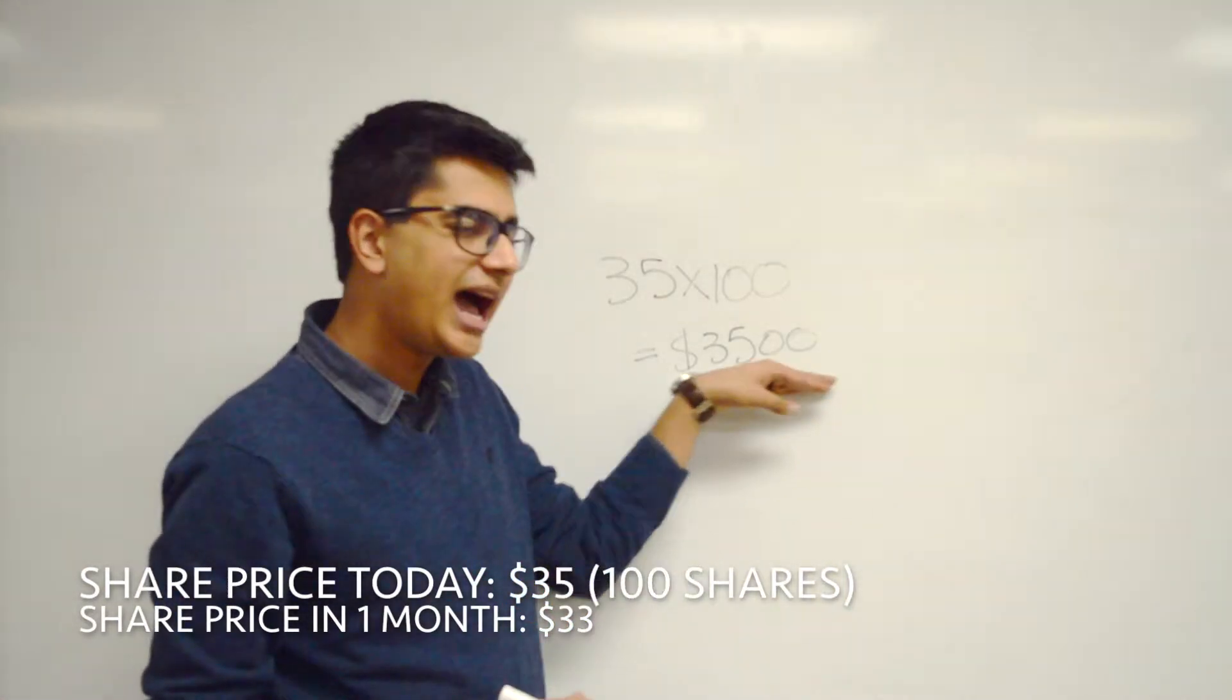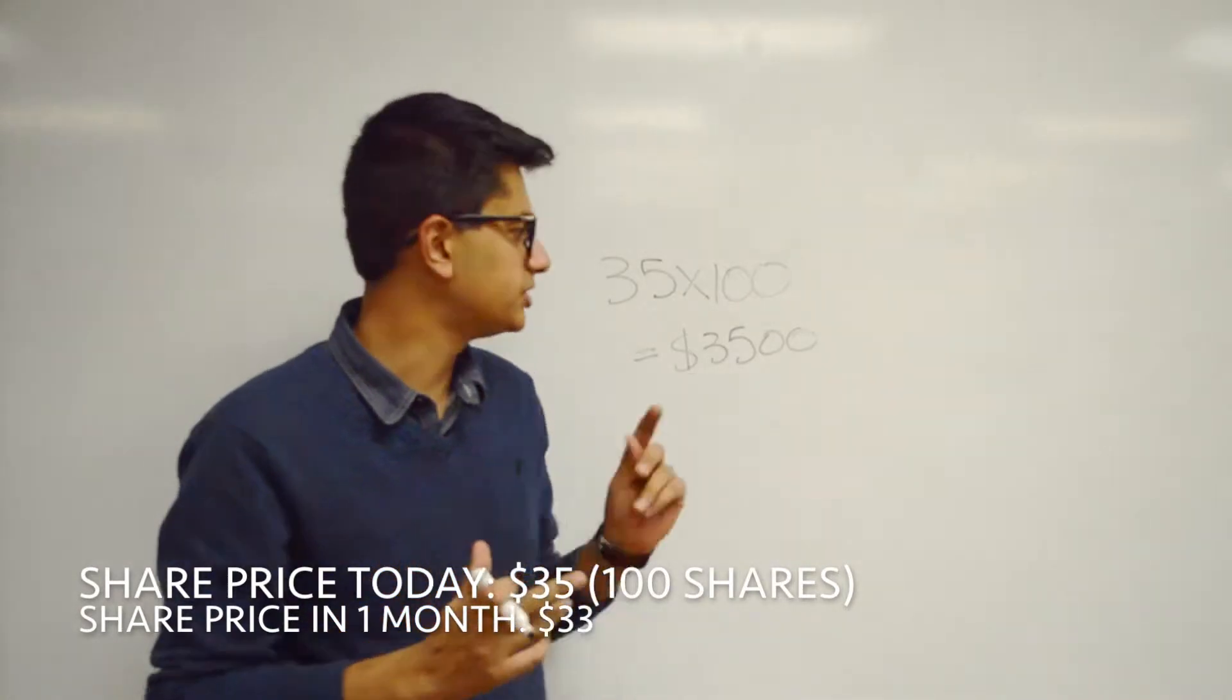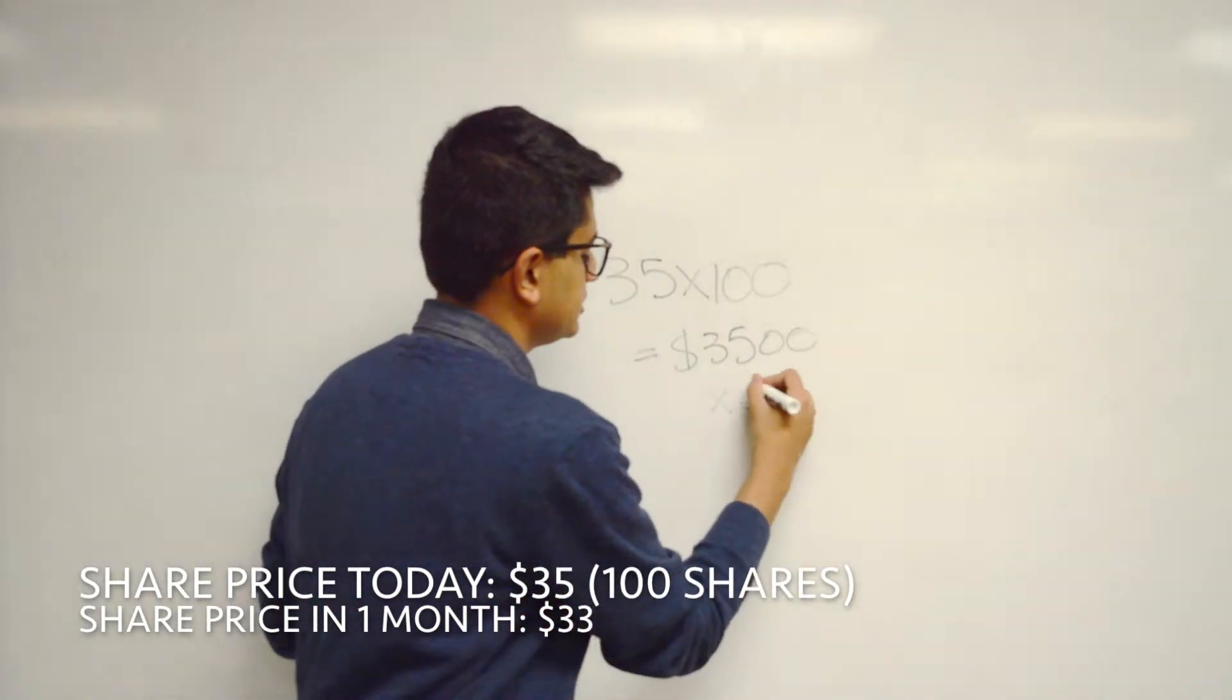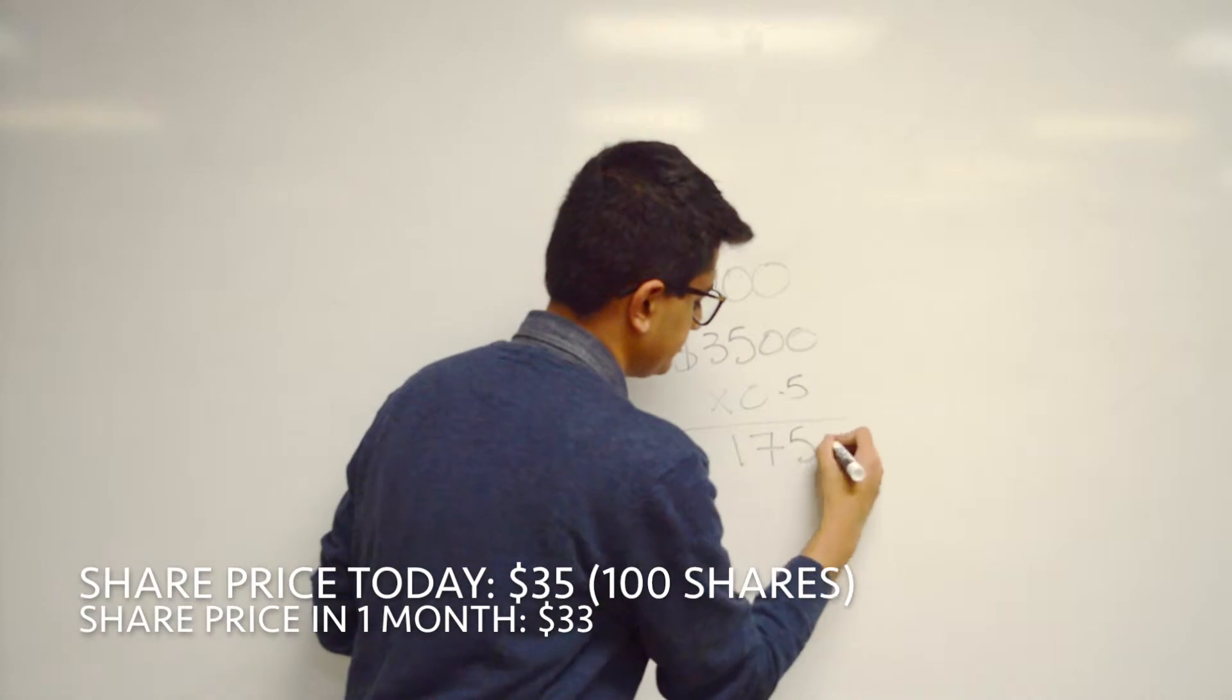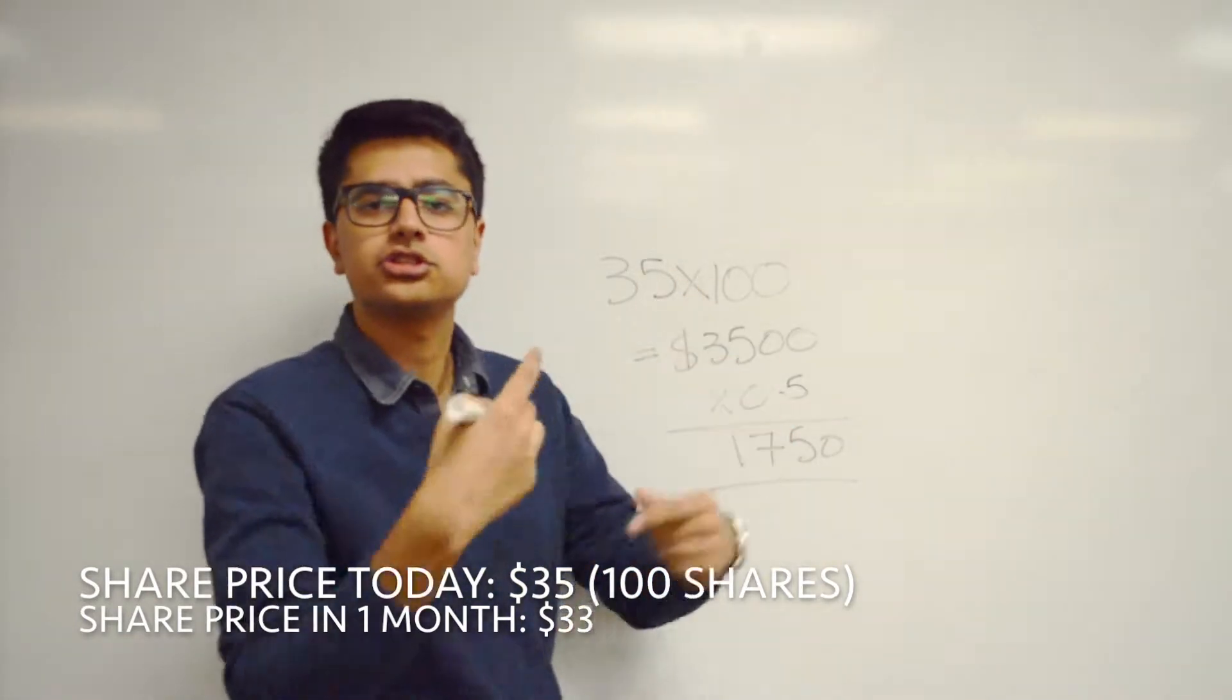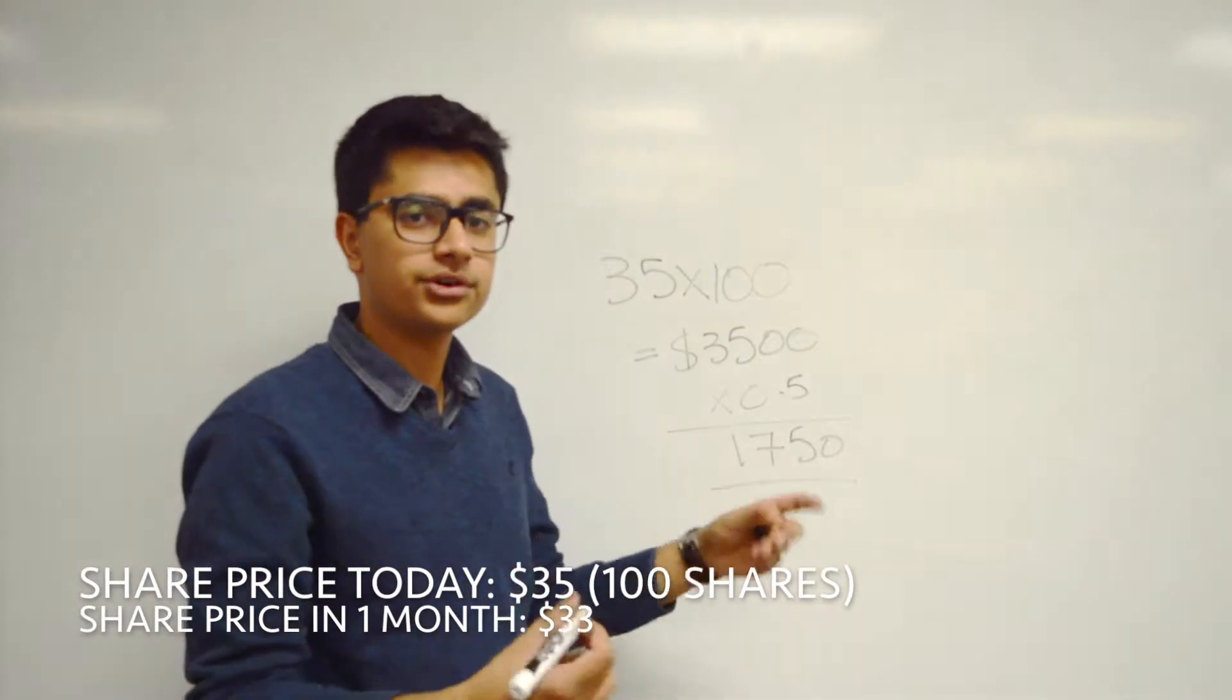But you need to deposit half of this into the short account. That money is not actually going to be used directly, but you need to keep it deposited in that account regardless. So $3,500 times 0.5 equals $1,750. So $1,750 is the amount that you have to put into the short account before your broker actually starts any of this process. This is a fixed amount that you need to keep in there for right now.